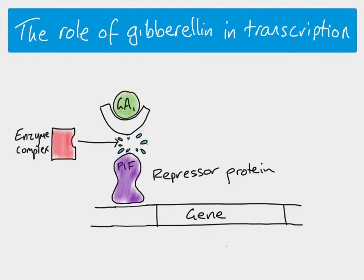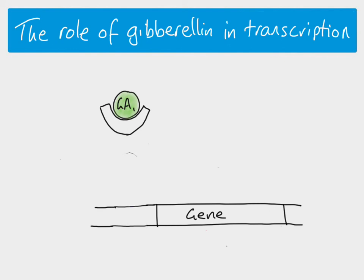The important thing is: when gibberellin is bound to a receptor, DELLA gets destroyed. If DELLA is destroyed, there is now nothing stopping PIF from binding to the DNA. Now that PIF is able to bind, transcription of the gene takes place.